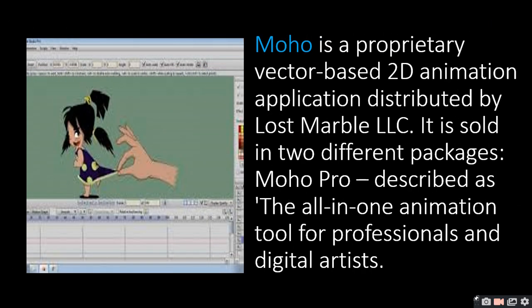Next is Moho, a proprietary vector-based 2D animation application distributed by Lost Marble LLC. It is sold in two different packages — Moho Pro, described as the all-in-one animation tool for professionals and digital artists. It is a vector-based 2D animation used by digital artists. It is a very good software.